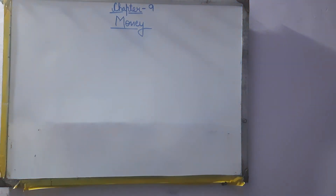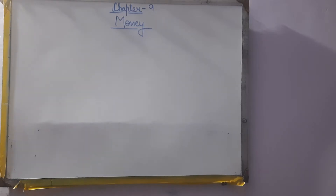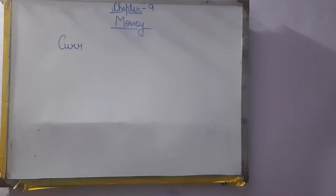Which currency note is this? This is 10 rupees note. We have 20 rupees note also, 5 rupees note also. This is 50 rupees note. Like this, we have 100 rupees note, 200 rupees note, 500 rupees note, etc. The type of money used in a particular country is called currency.